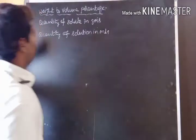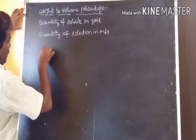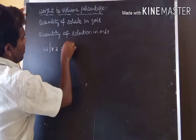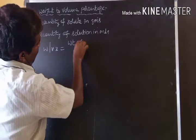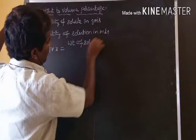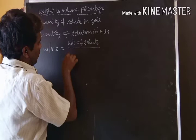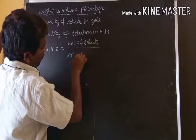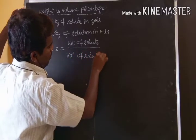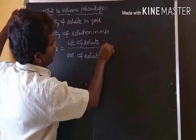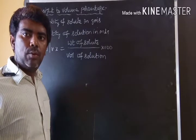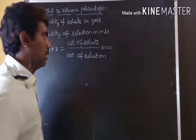Weight-to-volume percentage is equal to weight of solute divided by volume of solution, multiplied by 100. Simply written as W / V × 100. This is the weight-to-volume percentage formula.